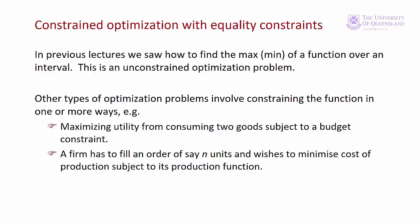However many interesting economic problems are constrained optimisation problems. A constraint that most people face is a budget constraint — we don't have unlimited funds to satisfy our wants. A constraint on firms is their ability to produce goods, that is their production function. We'll see other examples of constraints as we work through the exercises associated with this topic.